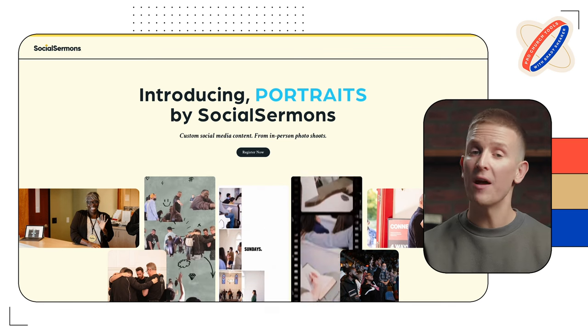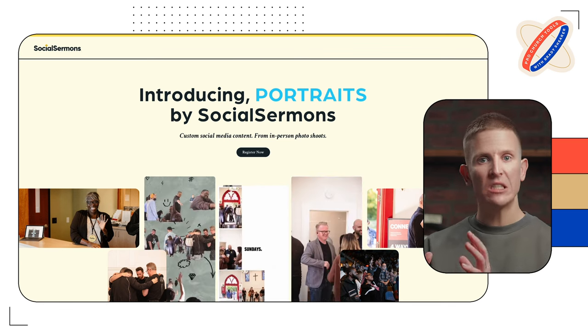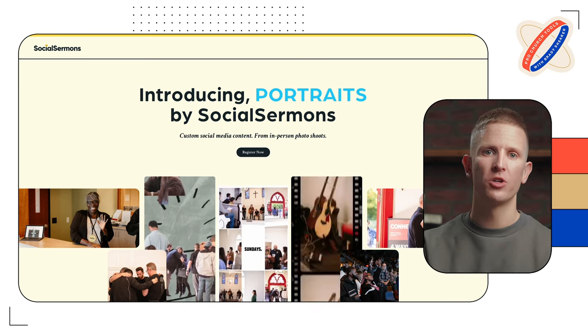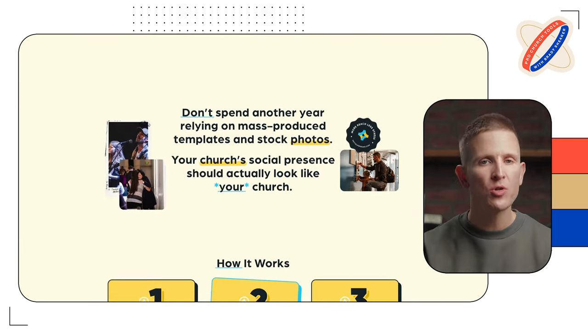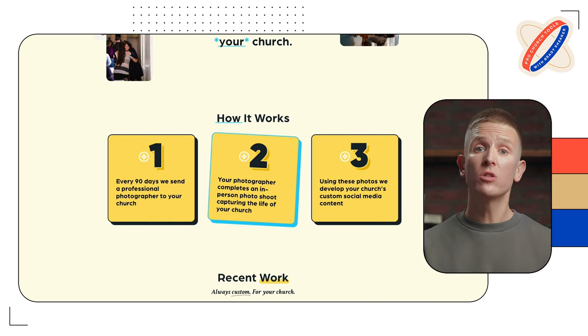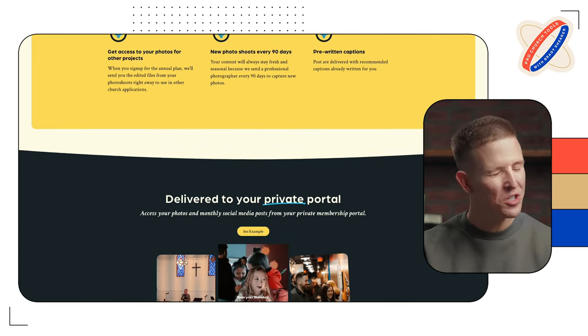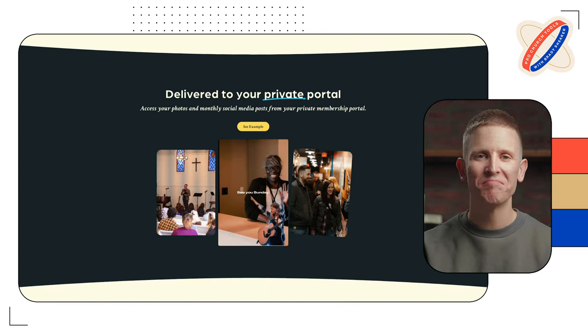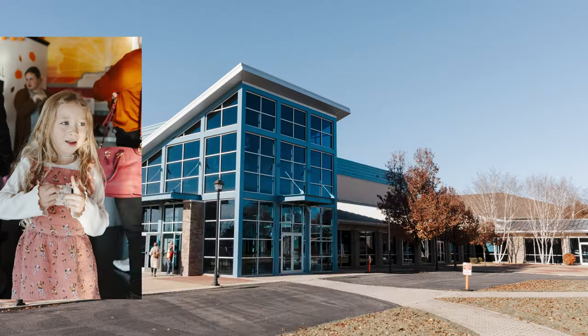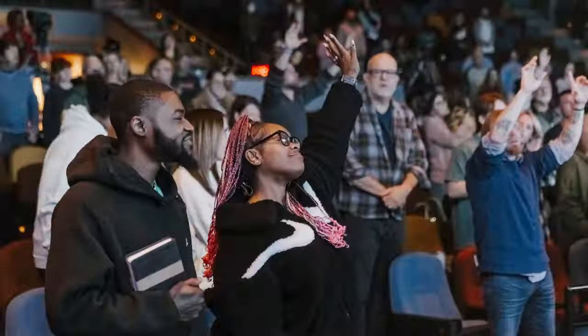Now, what about these photos? Maybe you don't feel your church is equipped to capture them. Today we are launching a brand new solution called Portraits by Social Sermons, where every 90 days we will send a professional photographer to your church. They'll do an in-person photo shoot capturing church life on a Sunday morning, and then we'll use those photos to develop your church's custom social media portraits, sent to you brand new every single month. Every example you've seen so far in this video is from a church where we sent a photographer and used those photos to develop these posts.